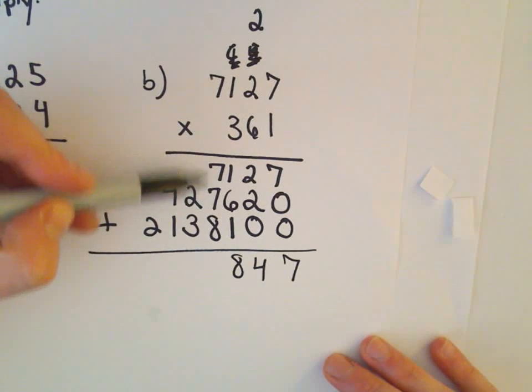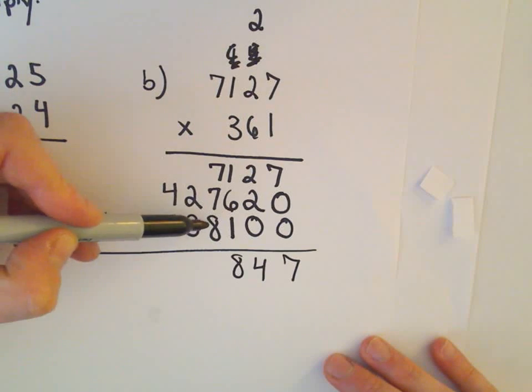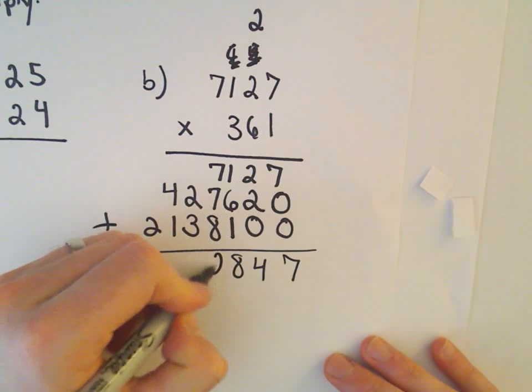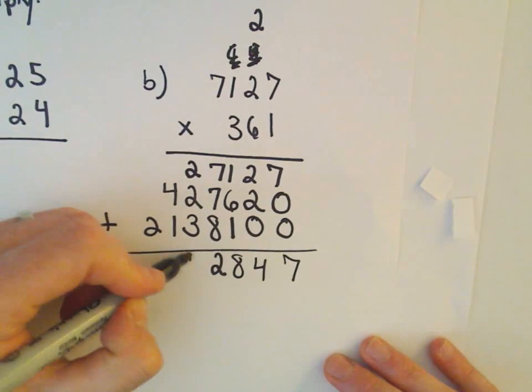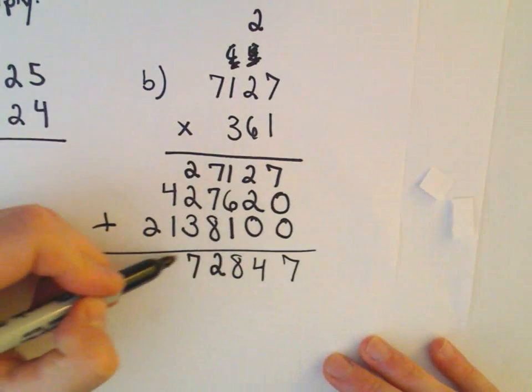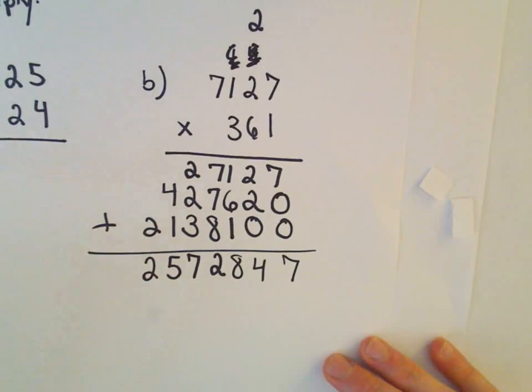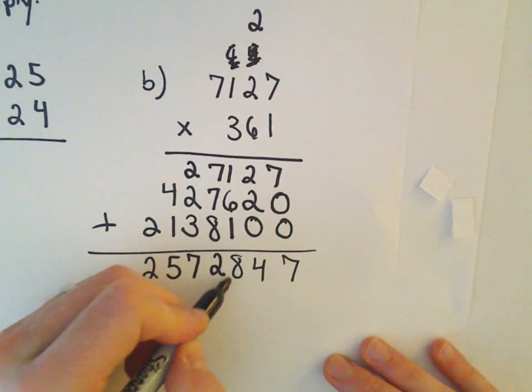Let's see, 7 and 7 is 14. 14 plus 8 is going to be 22. So I'll keep the 2, carry a 2. 2 and 2 is 4, plus 3 is 7. 4 and 1 is 5. Drop down the 2. And again, now we've got our solution.